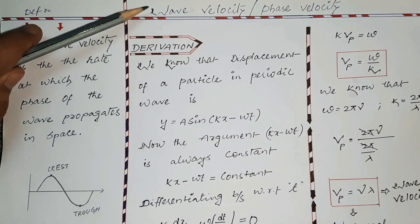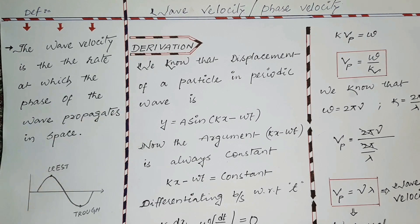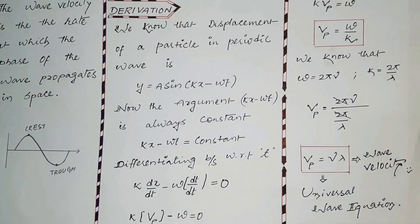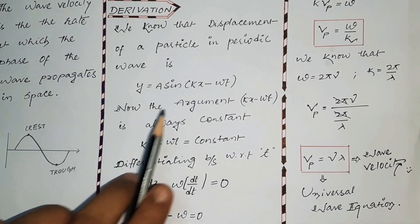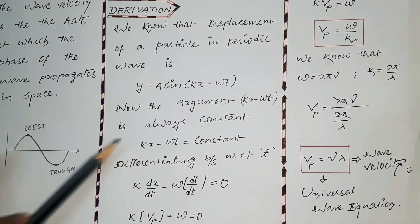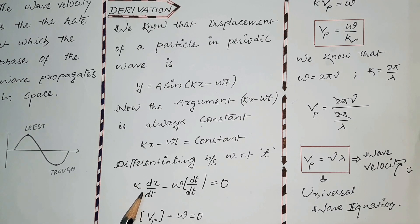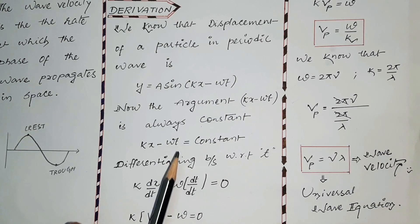Now we shall derive the equation for wave velocity. Starting with the displacement equation y = a sin(kx − ωt), this is the displacement of a particle under a periodic wave. The term kx − ωt is called the argument and it is always constant, so kx − ωt = constant. Differentiating with respect to time: k is constant, so differentiating x with respect to time gives dx/dt, and ω is constant, so differentiating t with respect to time gives dt/dt.